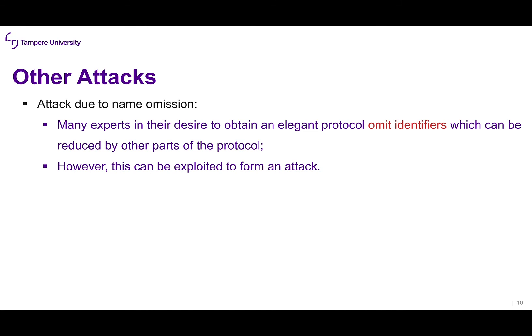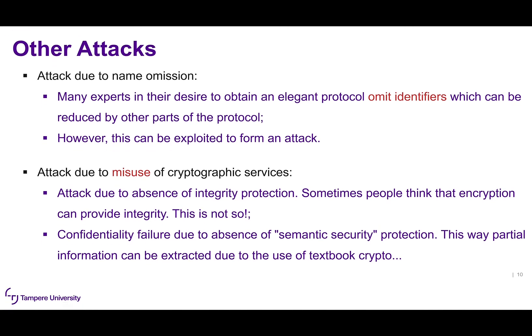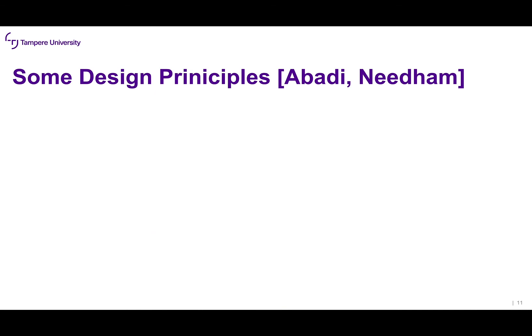Some other attacks include: attack due to name omission — many experts, in the desire for an elegant protocol, omit identifiers which they believe can be inferred from other parts of the protocol, but this can be exploited. Another is attack due to misuse of cryptographic services — for example, people sometimes think encryption provides integrity, but it does not. There is also confidentiality failure due to absence of semantic security protection, where partial information can be extracted from the use of textbook crypto.